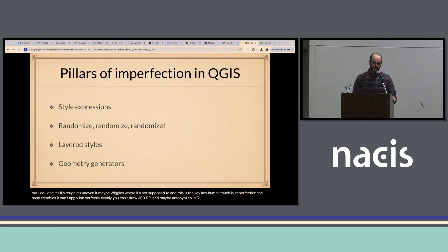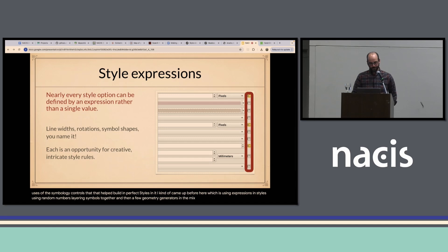In QGIS, I've tried to identify some essential uses of the symbology controls that help build imperfect styles, and I kind of came up with four here: using expressions in styles, using random numbers, layering symbols together, and then a few geometry generators in the mix. Most of the symbology panels in QGIS have one of these little buttons that I've highlighted on the right for nearly every option, and this is where you can define symbol properties by some kind of expression rather than a single value.